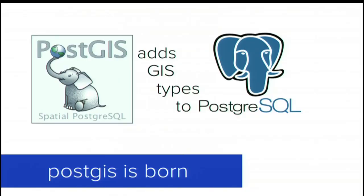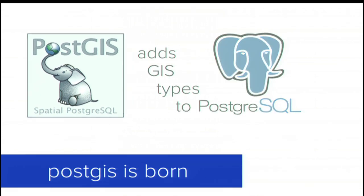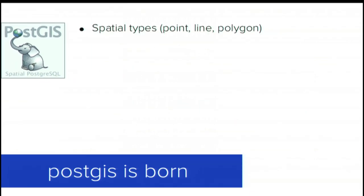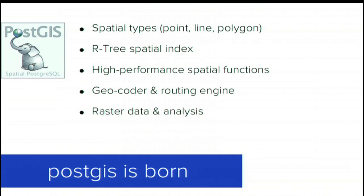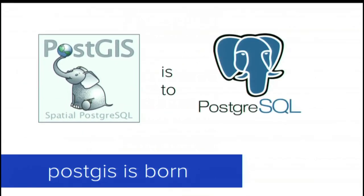For those of you who are new to this: PostGIS is a spatial extension for the open source enterprise database PostgreSQL. It supports all the ISO SQL/MM types. It has an auto-tuned R-tree spatial index, query planner integration, and high performance support for common spatial predicate tests. It's got a geocoder, routing package add-on, support for raster data and analysis in the database, and support for LiDAR data and analysis in the database.